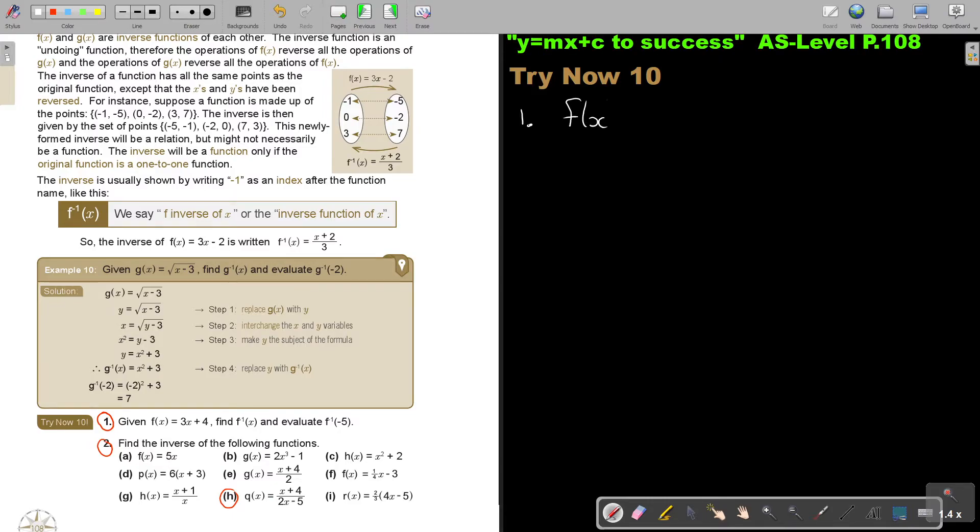So, F(X) is equal to 3X plus 4. Find the inverse. The first thing is make it a Y. In the place of F(X), put a Y. The second step, interchange X and Y. Where you see an X, you make it a Y. Where you see a Y, you make it an X. And now, you are going to make Y the subject of the formula. So, X minus 4 is equal to 3Y. I divide by 3, and I'm going to get Y is equal to X minus 4 over 3. And now, I make this my new value. So, F minus 1 of X is X minus 4 over 3.